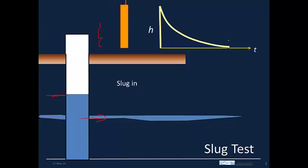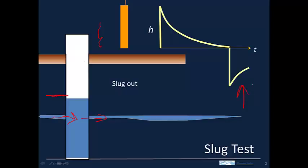Then we pull the cylinder out — this is the slug-out test. This causes the water level to drop, and now the water level in the well and the water level in the aquifer are out of equilibrium again. Water flows from the formation into the well to fill it back up and equilibrate with the aquifer. The water level drops suddenly and then rises back up, with a big change initially that then gradually approaches the initial head. The slug-out test is similar to the slug-in test except it's a head drop instead of a head rise.